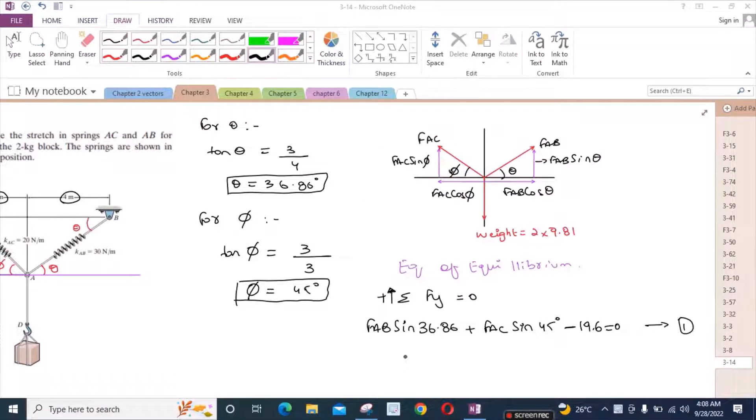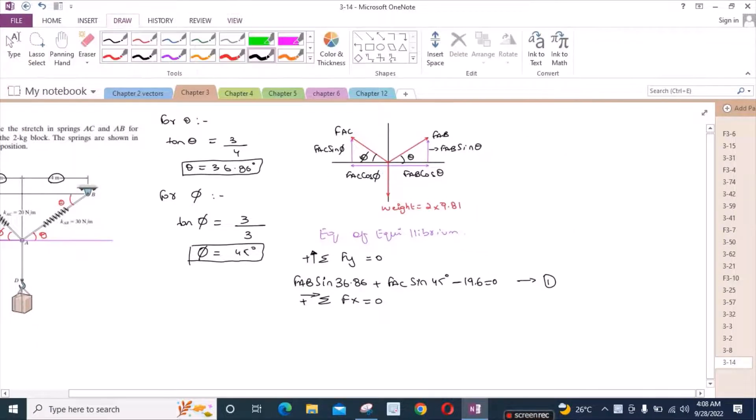We have one more equation, sum of the forces in x direction equals to 0. I am considering right-hand side as positive. So we have FAB cos theta, theta is 36.86 degrees, minus FAC cos phi, and phi is 45 degrees, equal to 0. Let's call this equation 2.